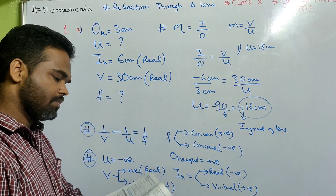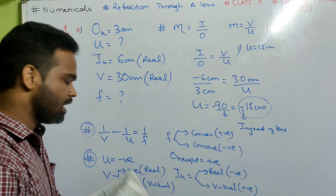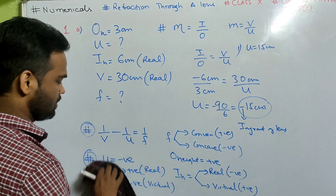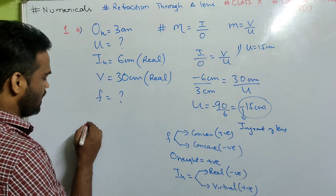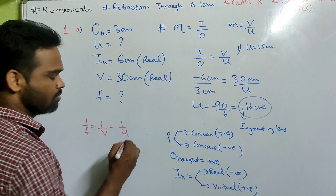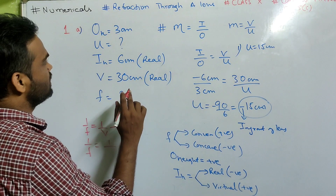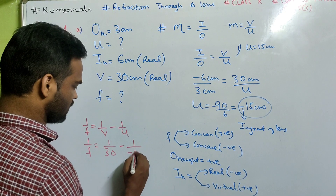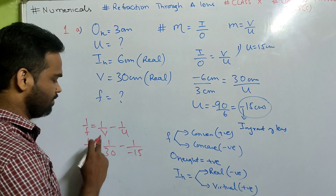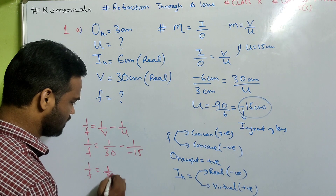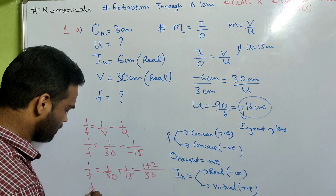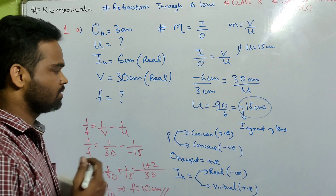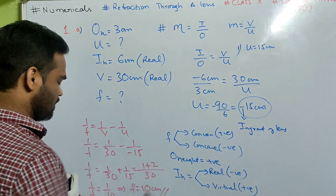The object distance is 15 cm. Now for the focal length: 1/F = 1/V minus 1/U. V is positive 30 (real image), U is negative 15 (object always negative). So 1/F = 1/30 minus 1/(minus 15) = 1/30 plus 1/15. LCM is 30: 1 plus 2 = 3/30 = 1/10. Therefore F equals 10 cm. So your object distance is 15 cm and your focal length is 10 cm.